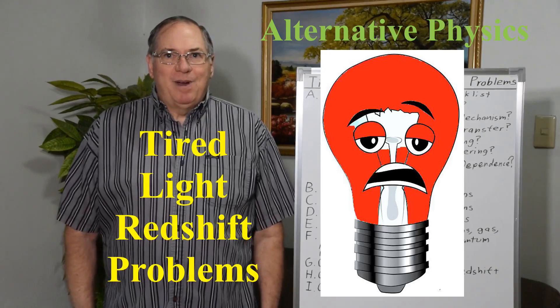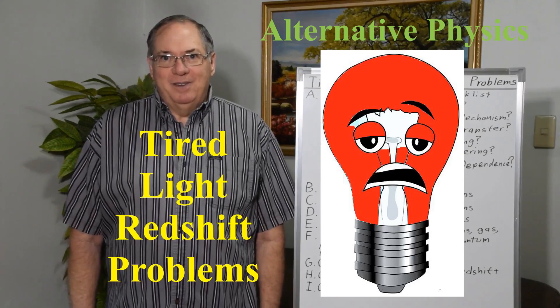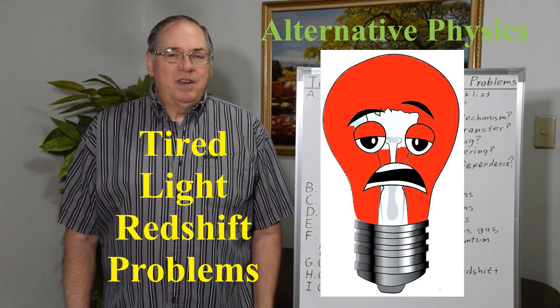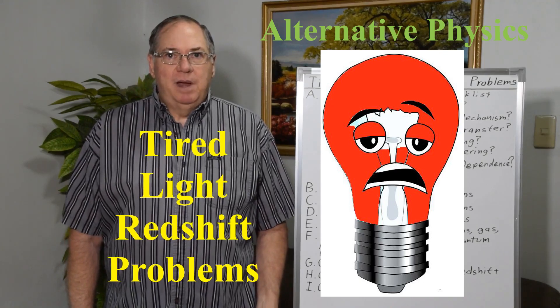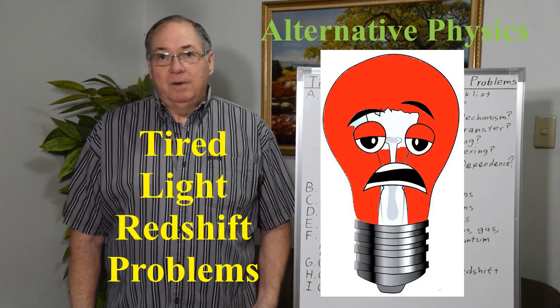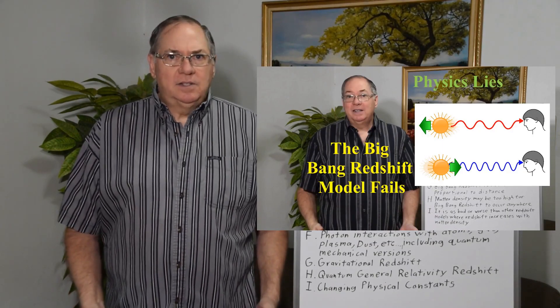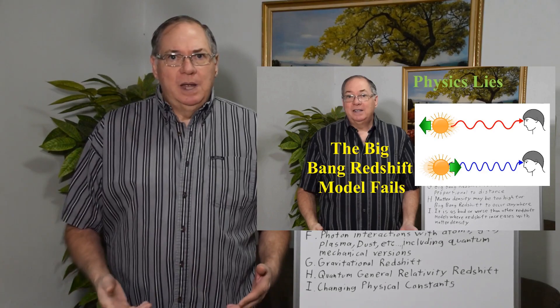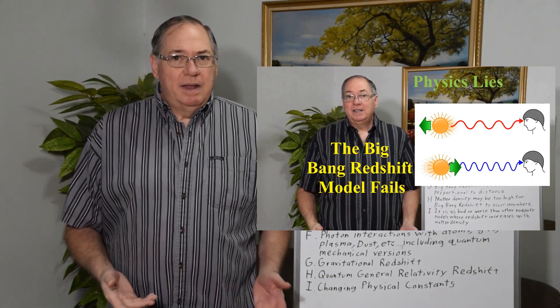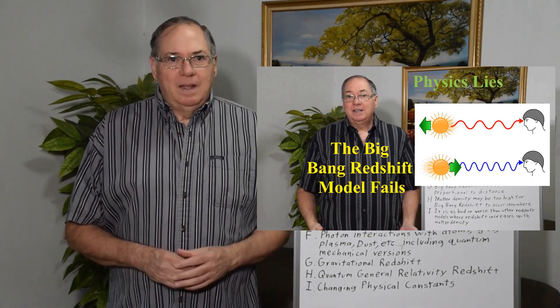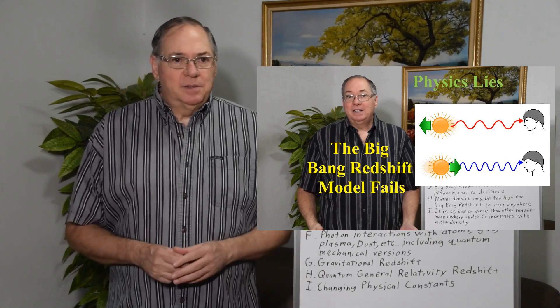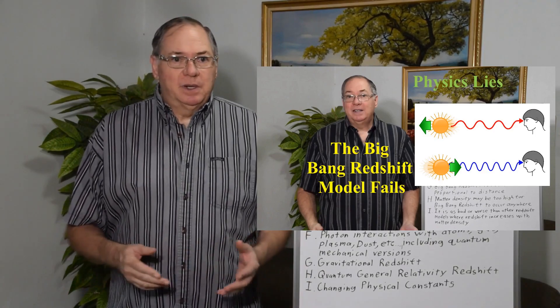Today I wanted to talk about problems with tired light redshift models. Now I mentioned in the past that the redshift model for the expanding universe fails because galaxies and galactic clusters aren't expanding, so it's a highly density dependent model and it doesn't work for other reasons as well because expansion doesn't work.